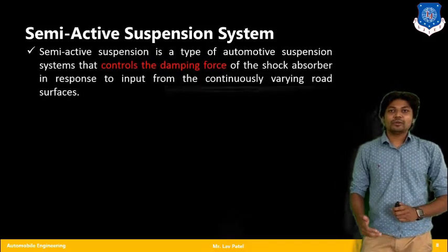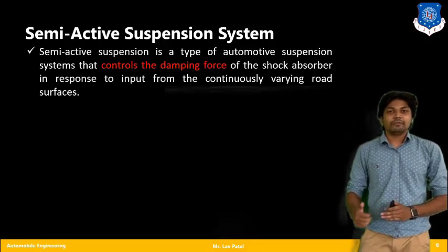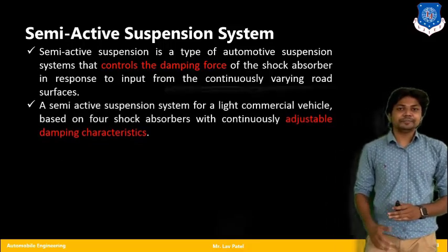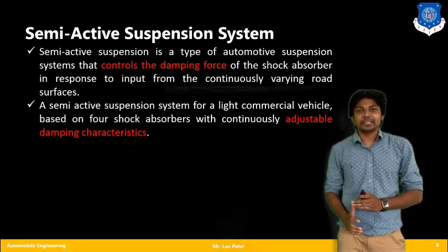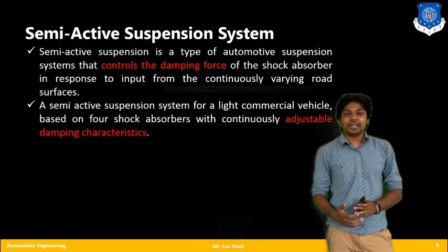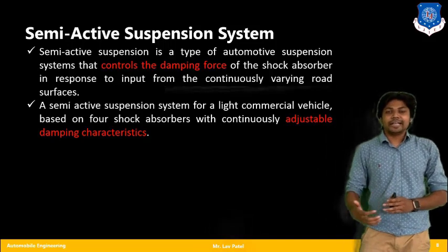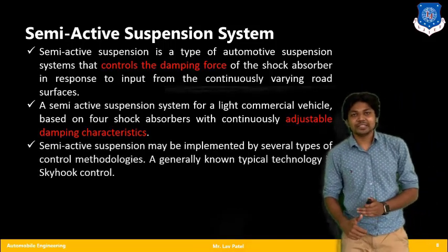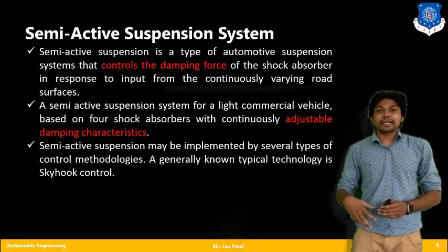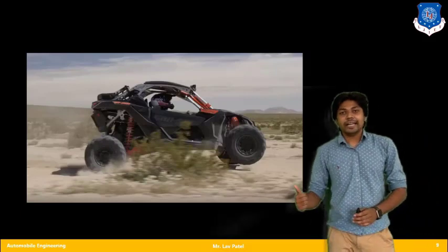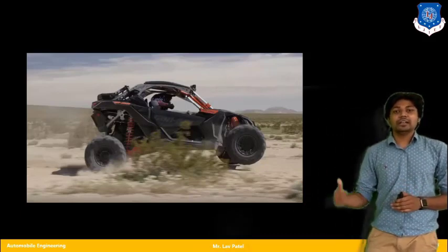Moving further, let us talk about the semi-active suspension system. The semi-active suspension system controls the damping force of the shock absorber. Also, semi-active suspension in commercial vehicles is based on the adjustability of the damping characteristics. Heavy or commercial vehicles can also have adjustable damping characteristics, which is very helpful while taking load. Semi-active suspensions are implemented by several types of control methodologies. There is also a video of a semi-active suspension system showing how it is incorporated in an off-road vehicle.